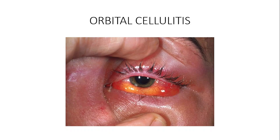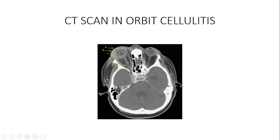Ancillary tests are necessary because some conditions may mimic orbital cellulitis. Do a full blood count — white blood cell count will usually be elevated. Depending on the presentation, if hematogenous spread is suspected, do a blood culture. A CT scan of the brain, orbit, and paranasal sinuses can be performed to visualize structures behind the orbital septum.